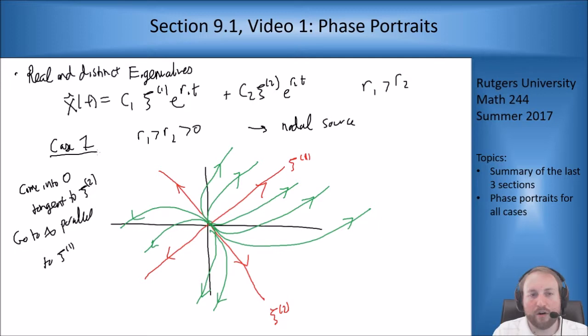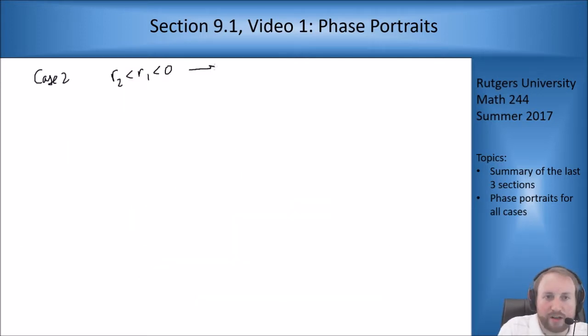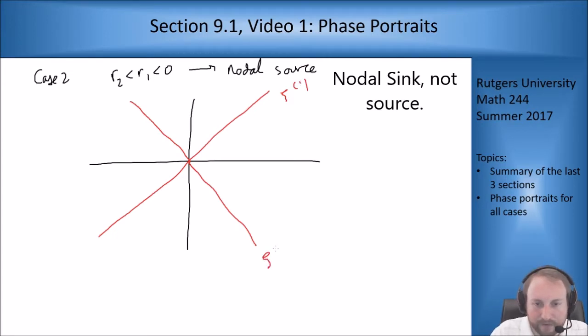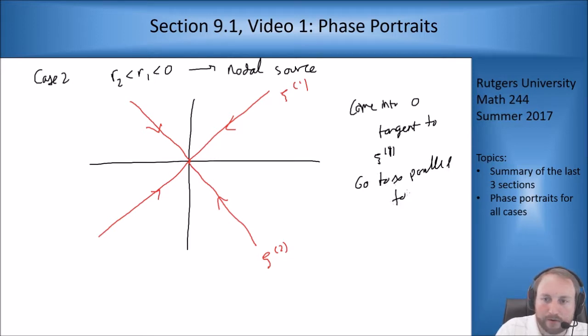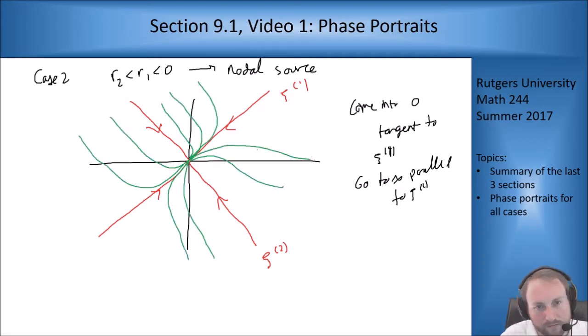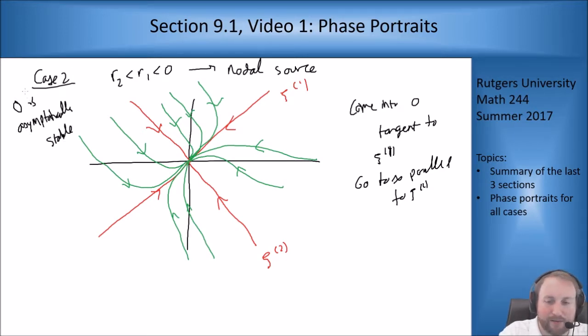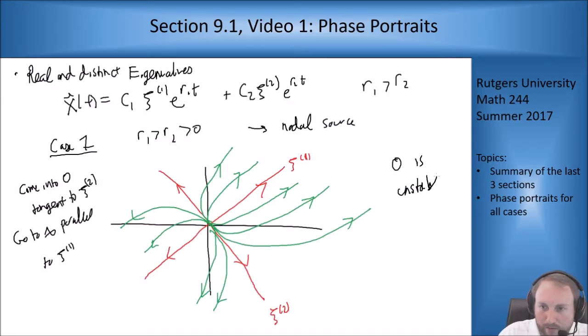There's the opposite case where r1 and r2 are both less than zero, in which case you get a nodal sink. C1 up here, c2 down here, everything's going in. Since r2 is vanishing first because r2 is more negative, I come into zero tangent to c1 and I go to infinity parallel to c2. Everything is going in towards the center. This guy is asymptotically stable because things are flowing into zero. Our first guy is unstable because curves nearby are running away.